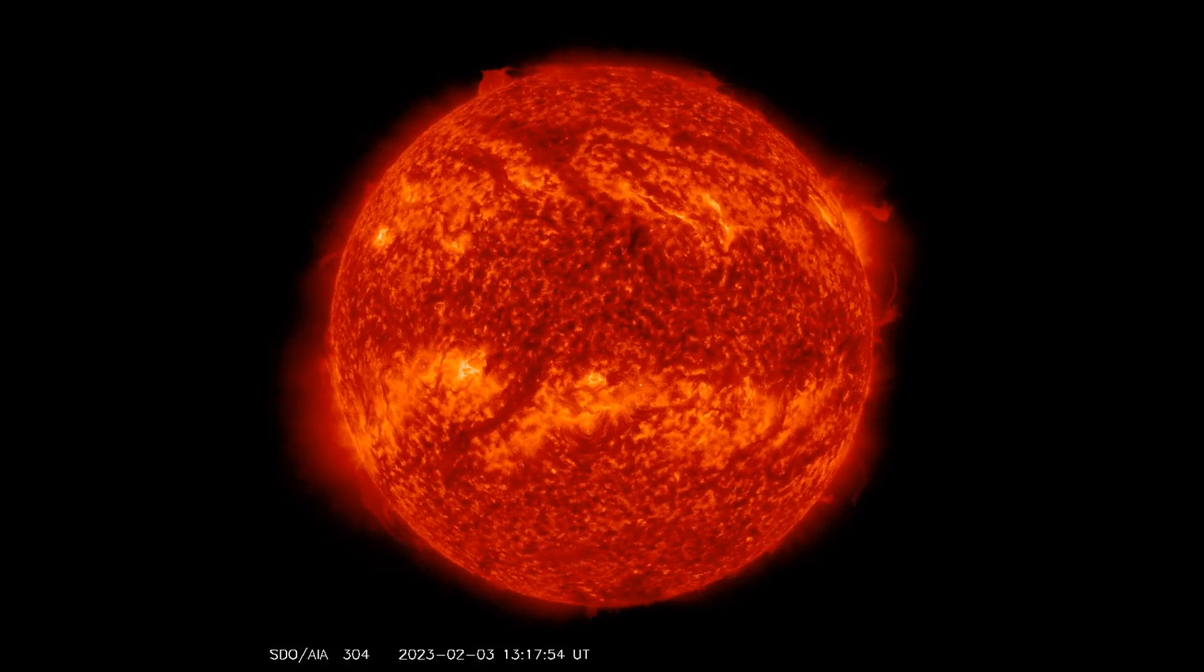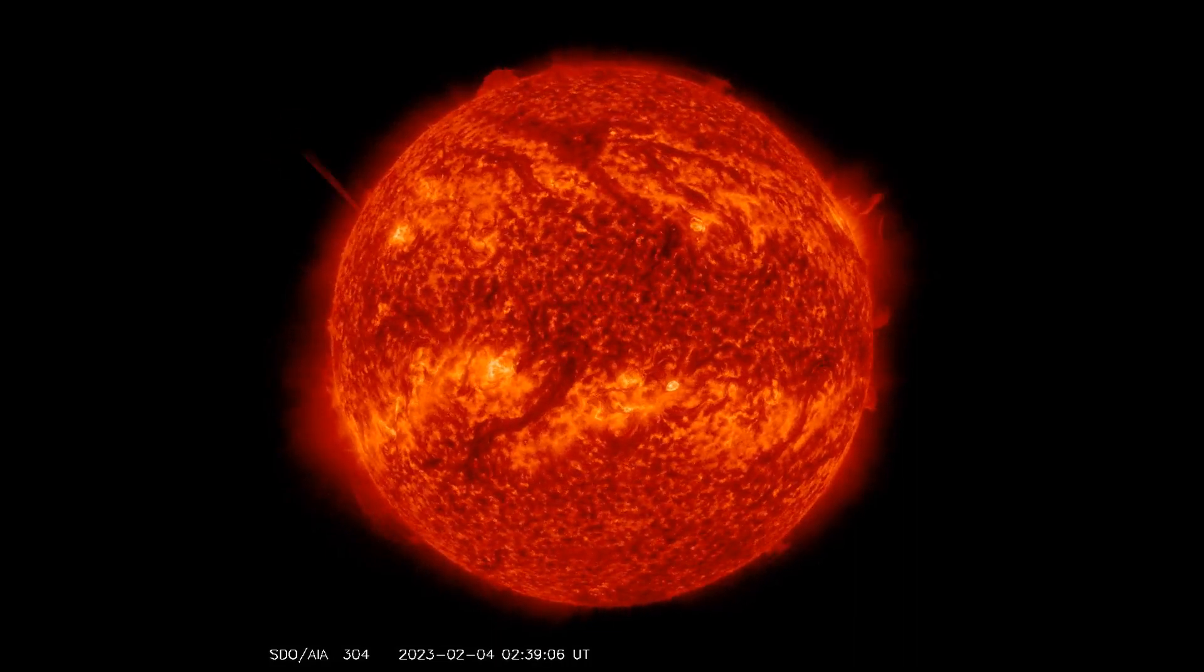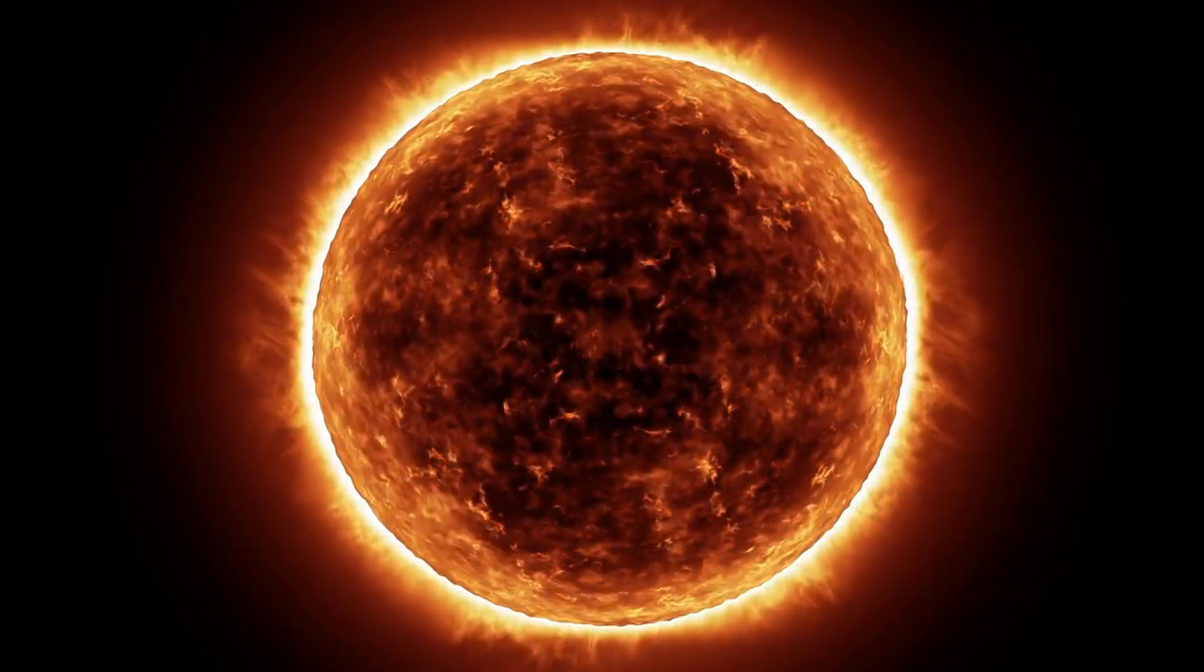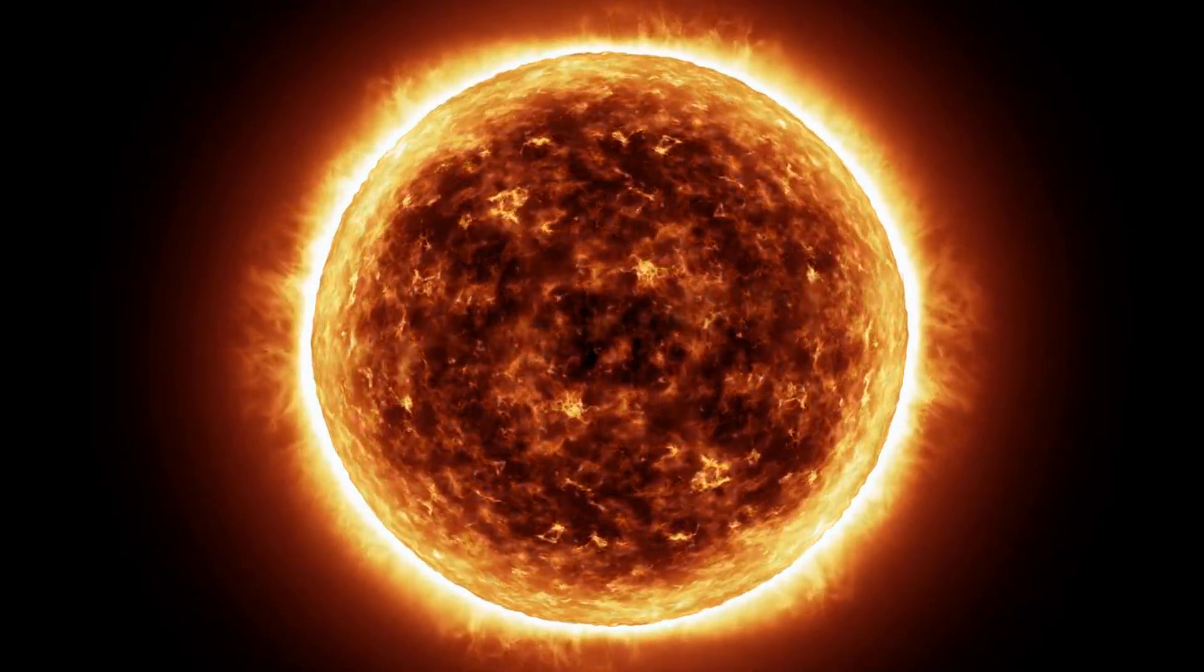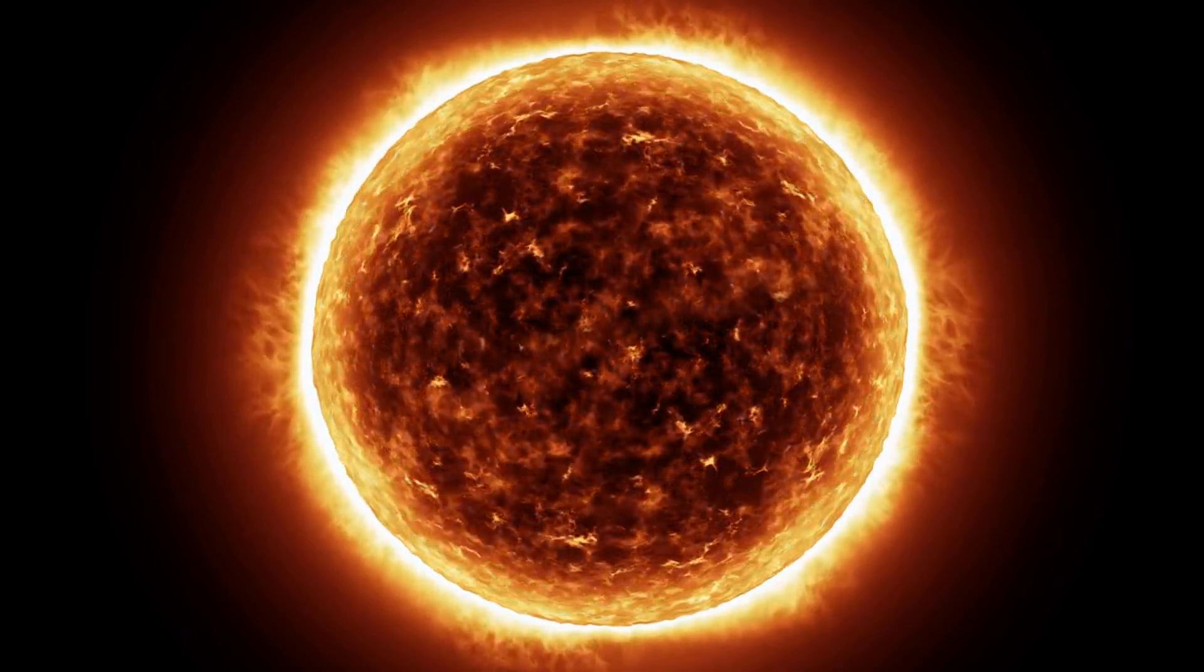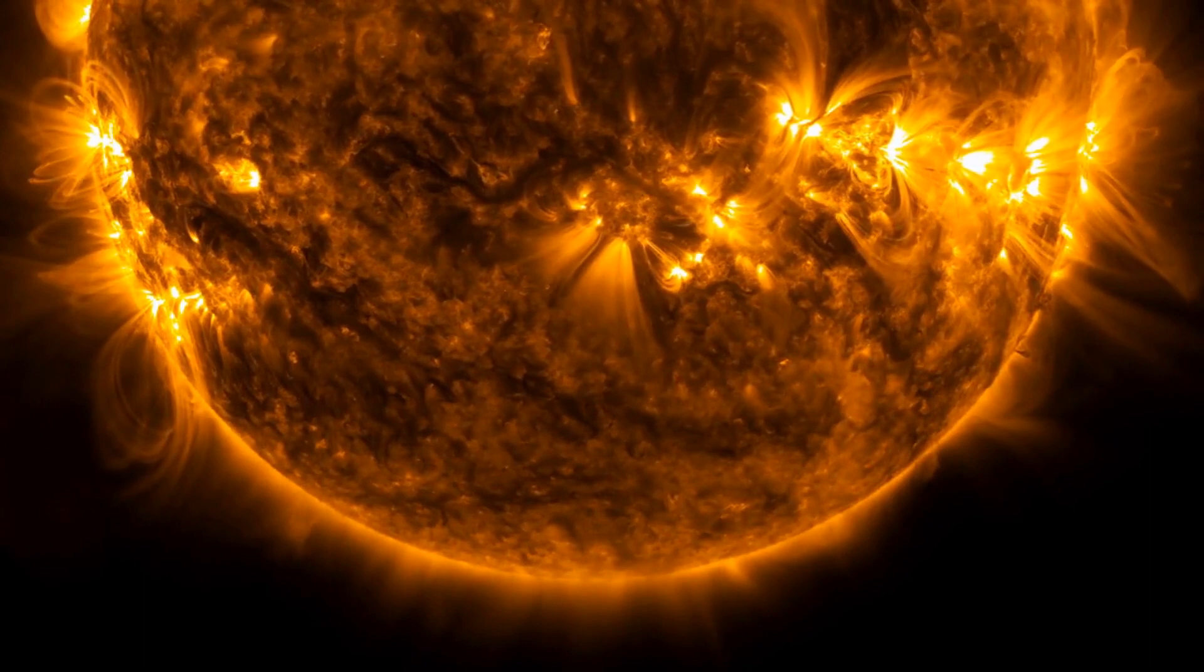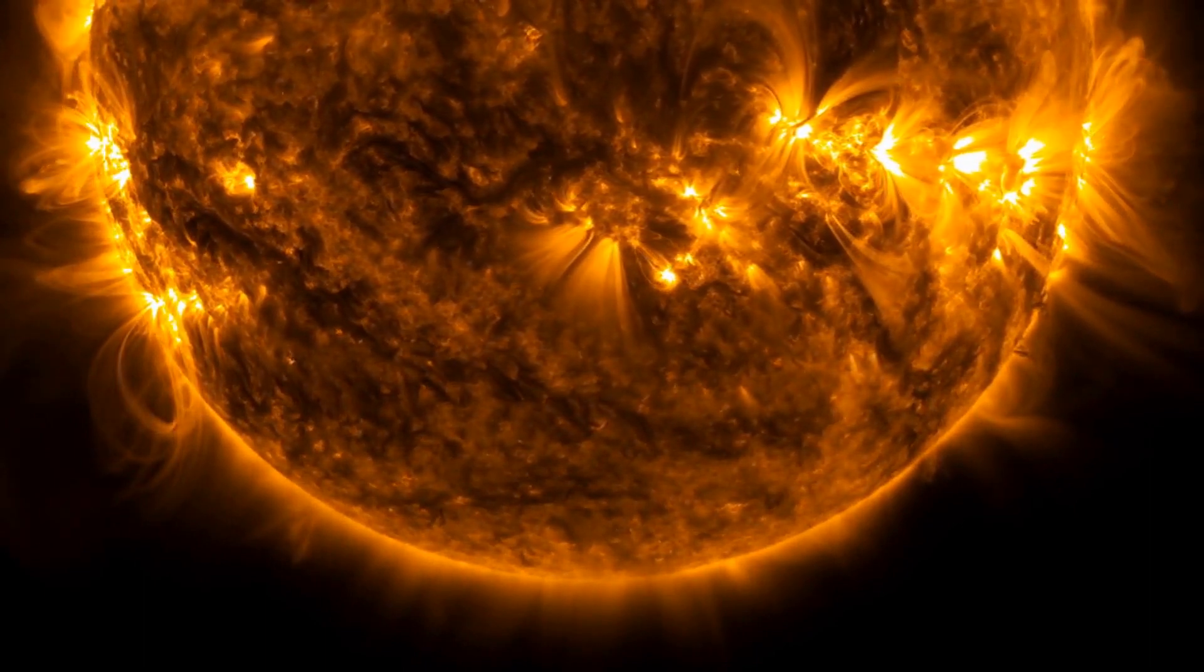Solar wind is created by the Sun's hot corona, which is the outermost layer of its atmosphere. The corona's temperature is several million degrees Celsius, and its particles are constantly being accelerated by the Sun's powerful magnetic fields. These particles escape the Sun's gravitational pull and are carried away into space by the solar wind.